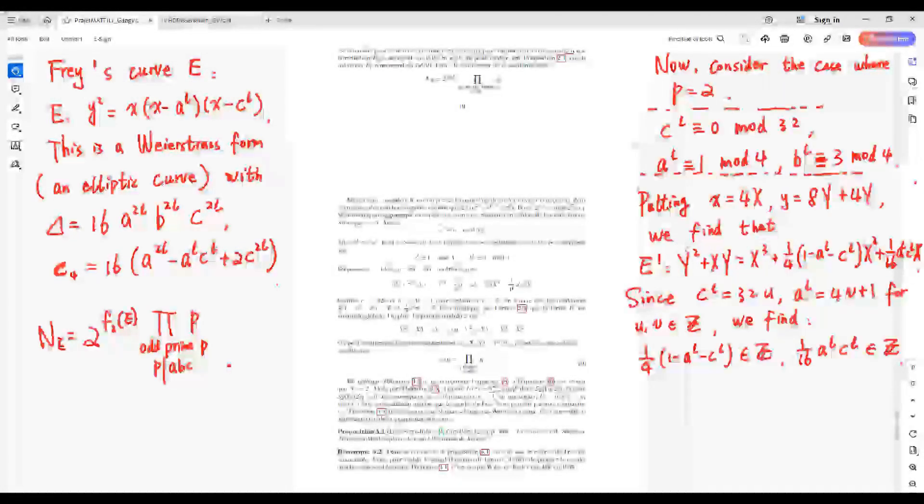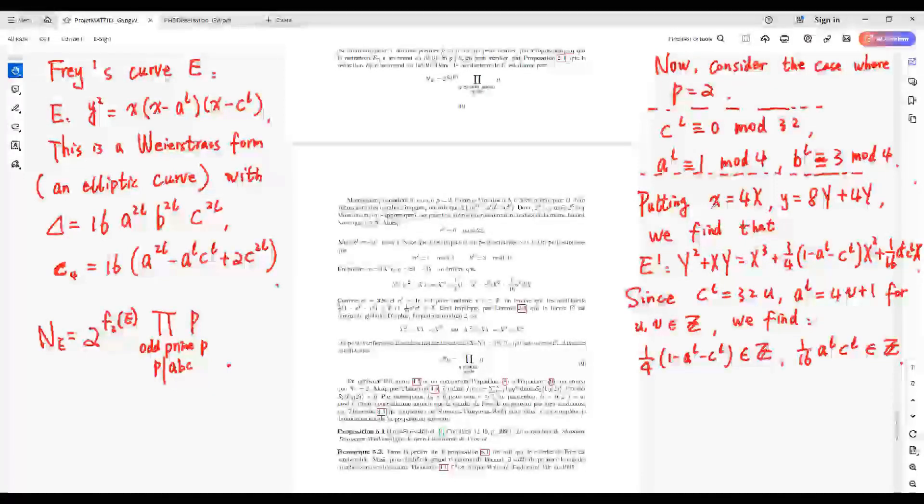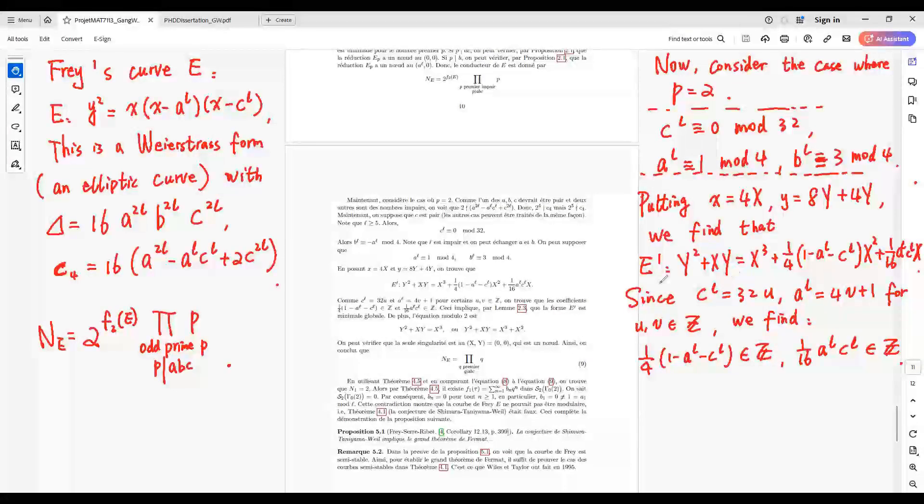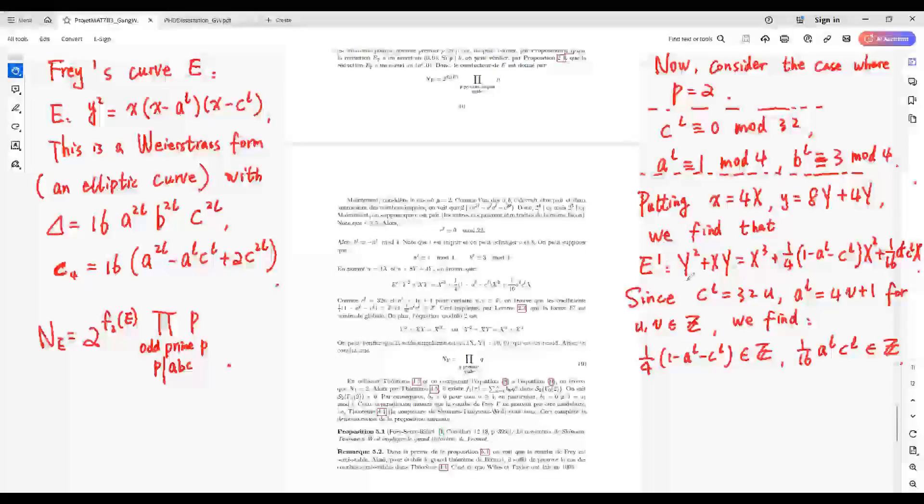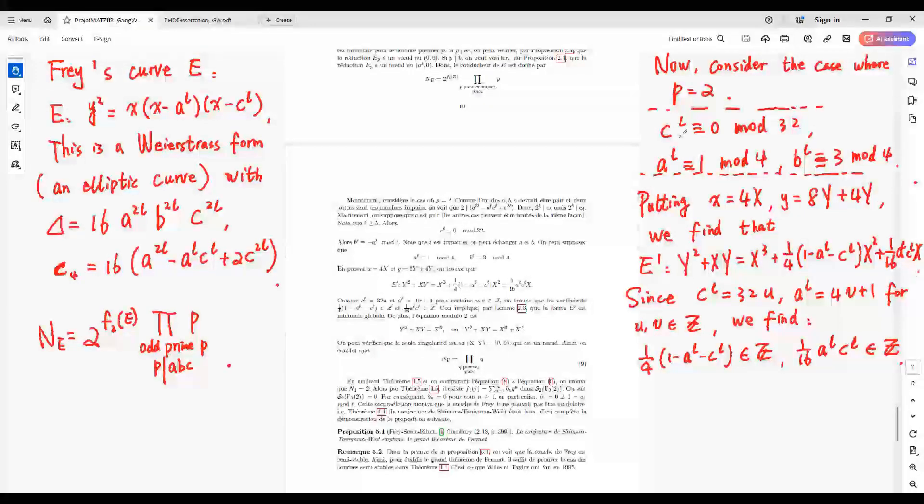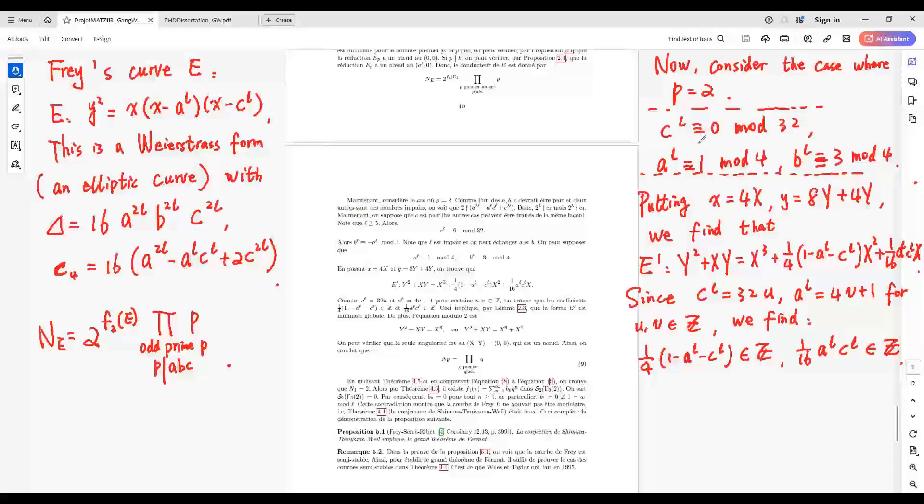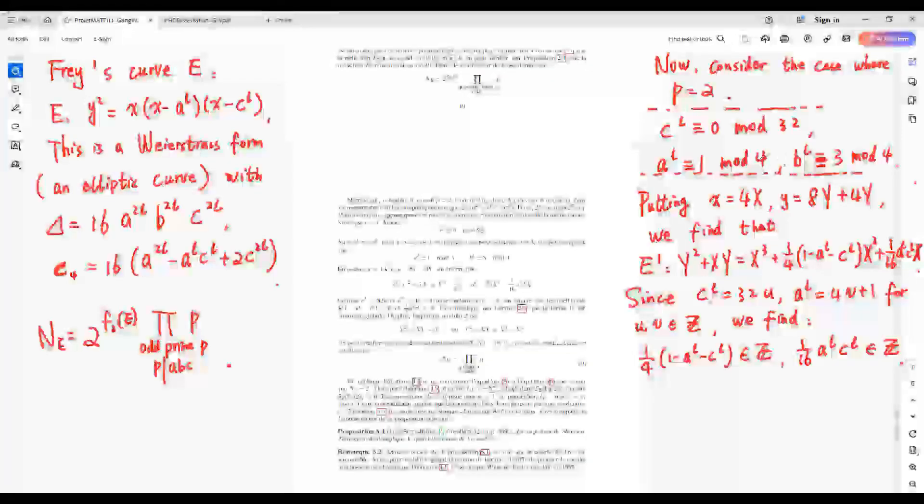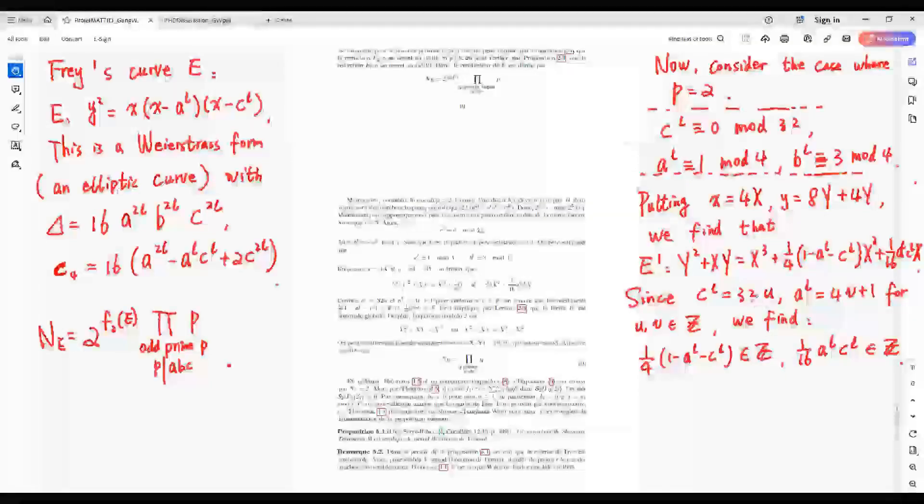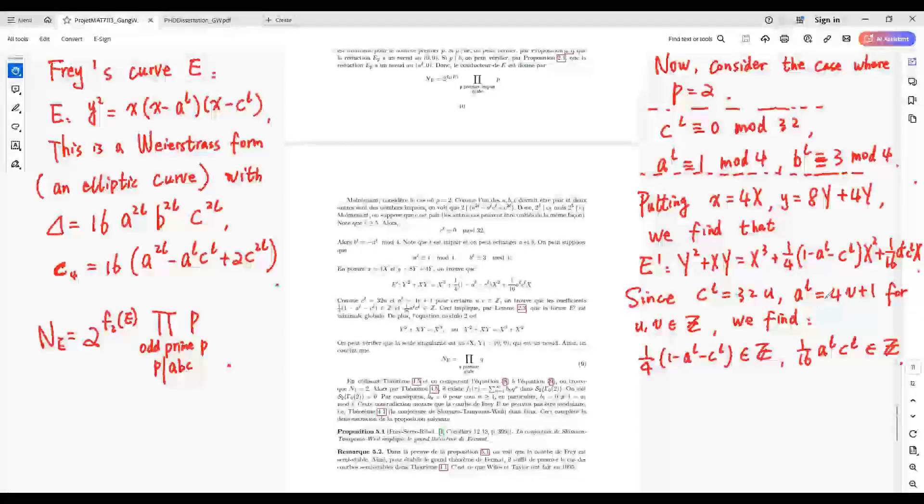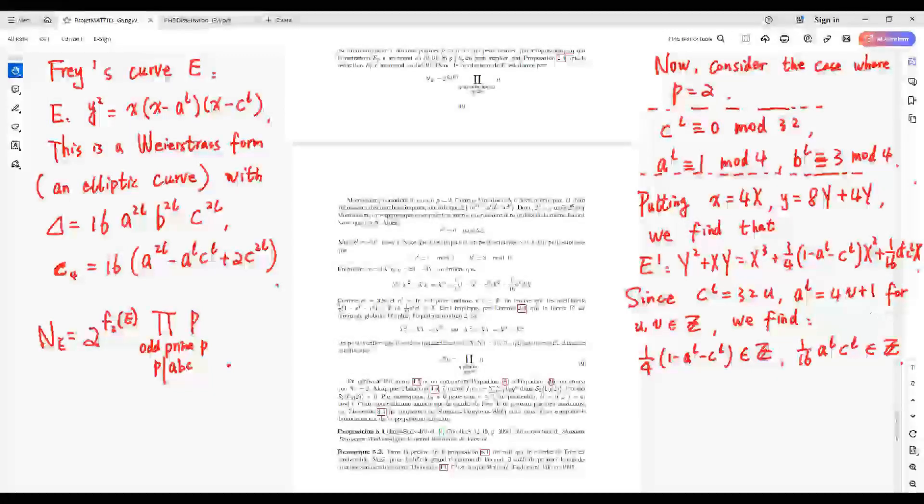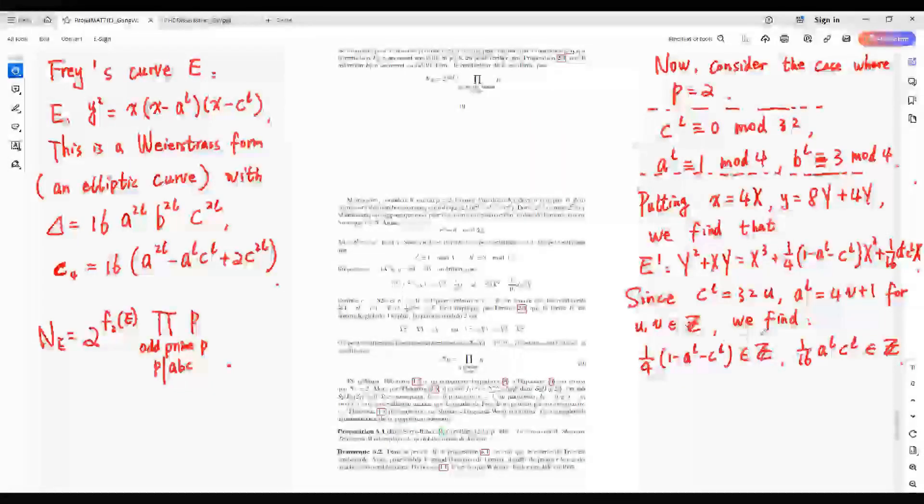Making a change of variables given by this, Frey's curve E can be written as E prime given by this one. From C^L given by this one, A^L given by this one, C^L equals 32U and A^L equals 4V plus 1 for some integers U, V.